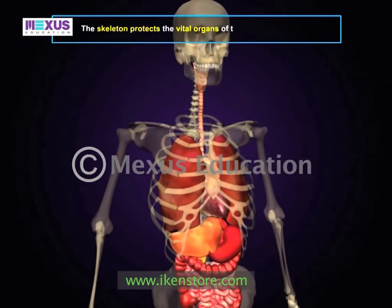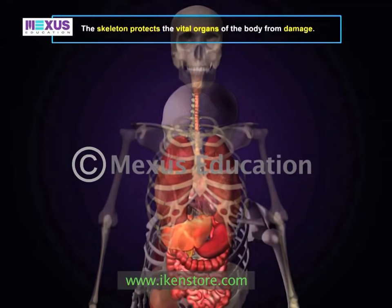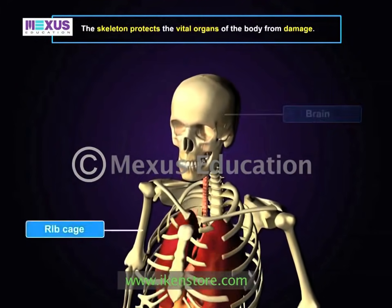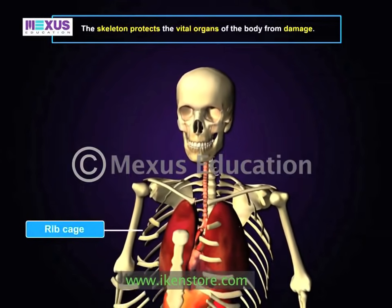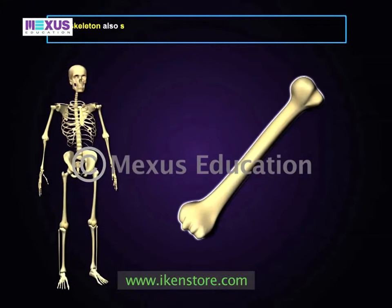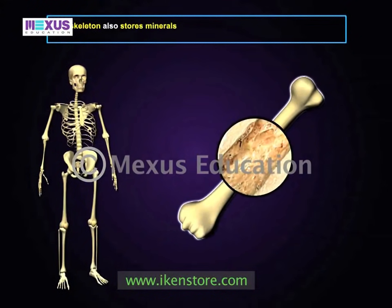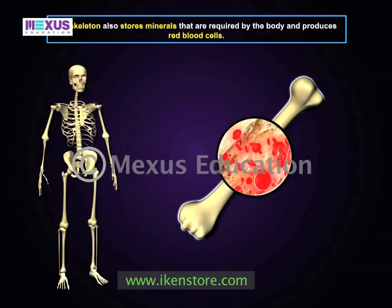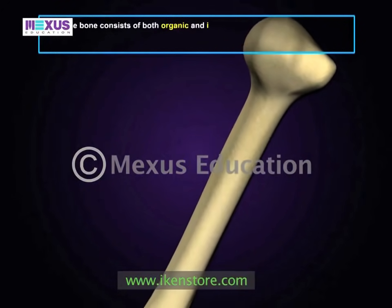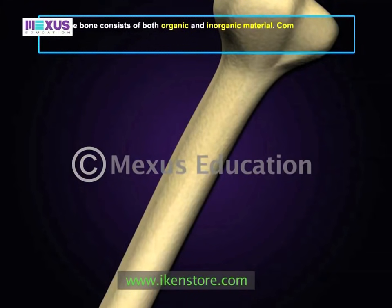The skeleton performs numerous functions. It protects the vital organs of the body from damage. The skull, for example, protects our brain, while the ribcage protects our heart and lungs. The skeleton also stores minerals such as calcium and phosphorus that are required by the body, and produces red blood cells.